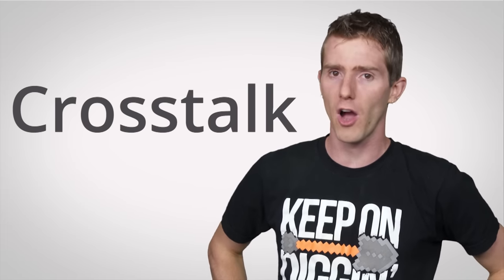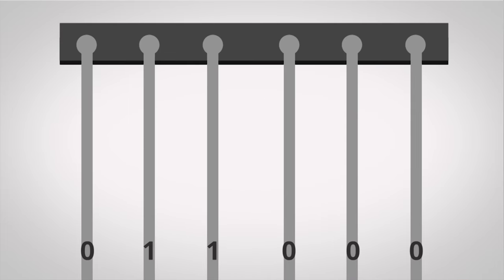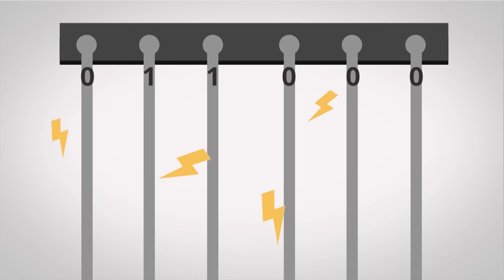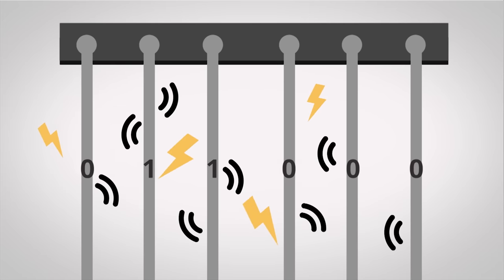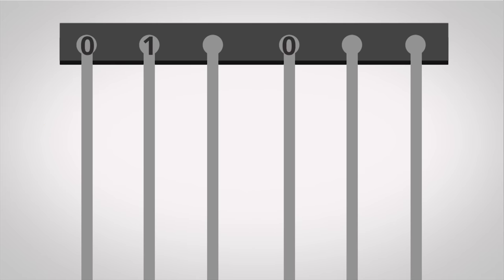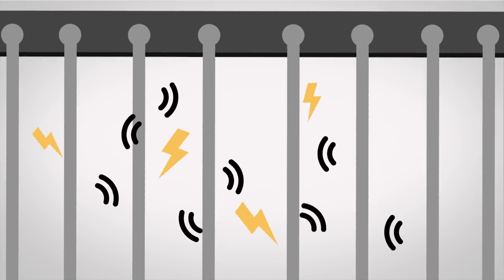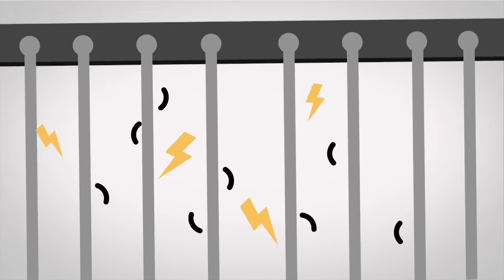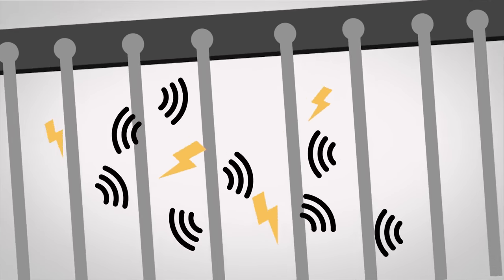Another phenomenon called crosstalk also complicated matters. Crosstalk is basically electrical interference between data lines that are close together, and it becomes more pronounced when you add more lines or when you try to make them faster.